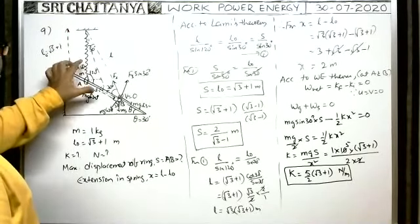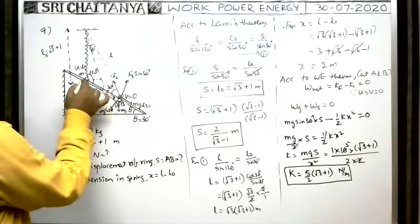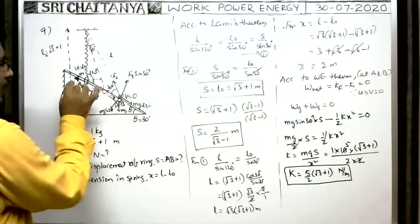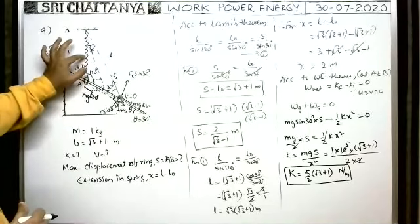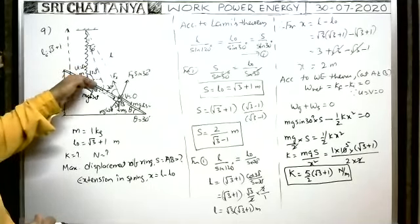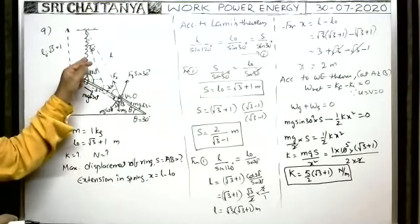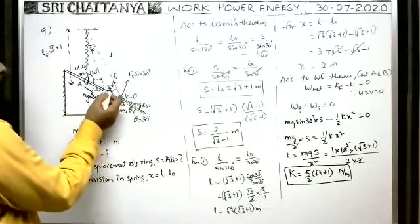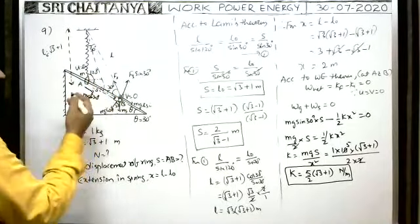When you release the ring, weight mg acts vertically downward. Resolving into components: mg cos 30 and mg sin 30. The component mg sin 30 acts along the rod downwards, so the ring starts sliding downward. At this initial position there is no compression or extension in the spring, so no spring force is developed — only the weight component acts along the rod. As soon as the ring displaces, the spring starts extending, developing a spring force component acting along the rod upwards.